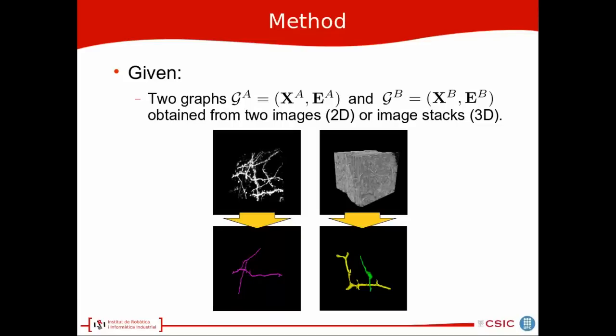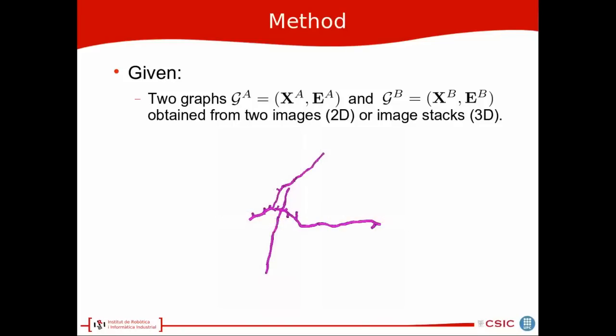The method that we are going to use is, given two graphs obtained from these two images or image stacks, which means that we take the neuronal structures and represent them as a graph, where the 2D or 3D points are the nodes, and the edges are the connectivity between those nodes.